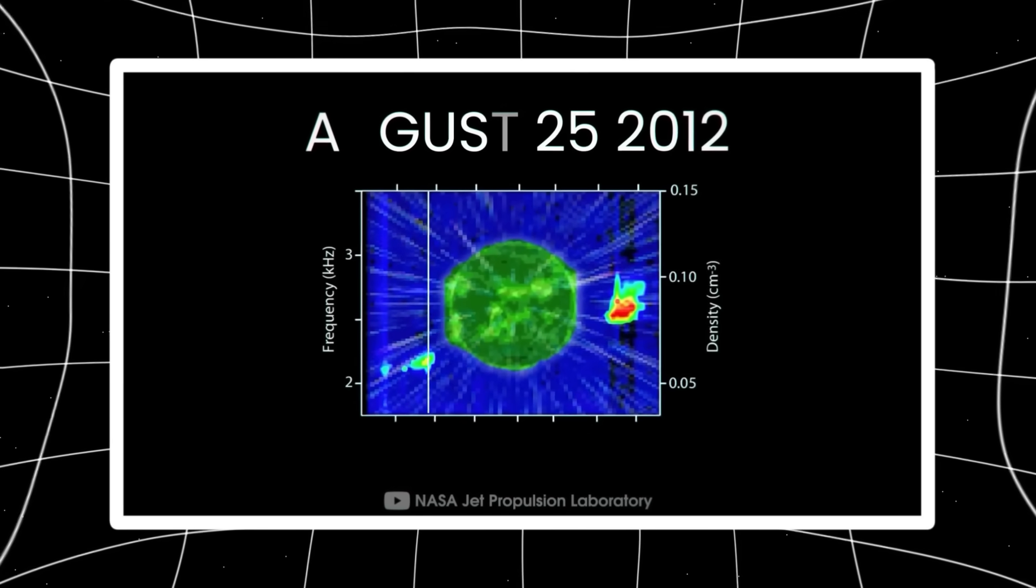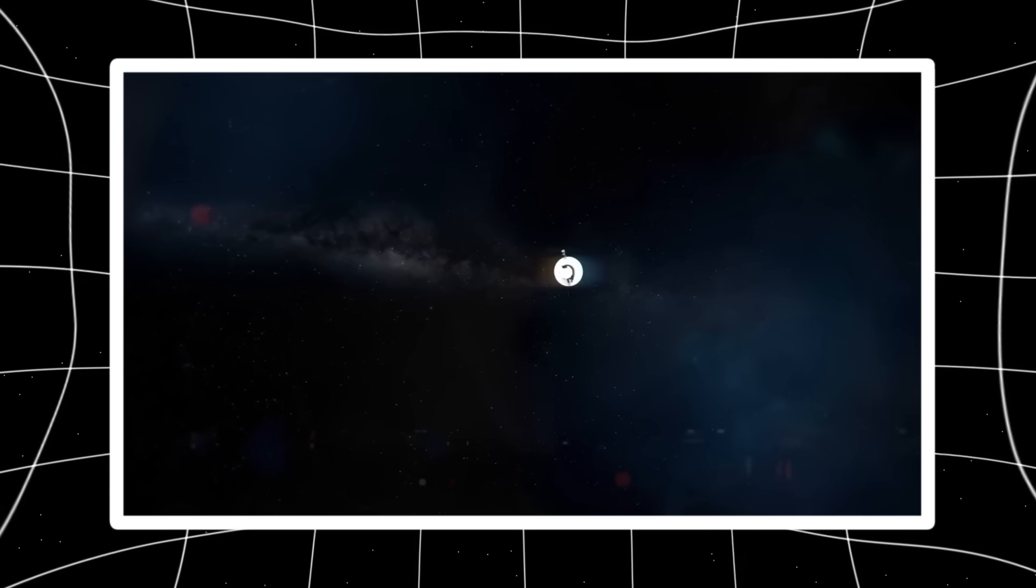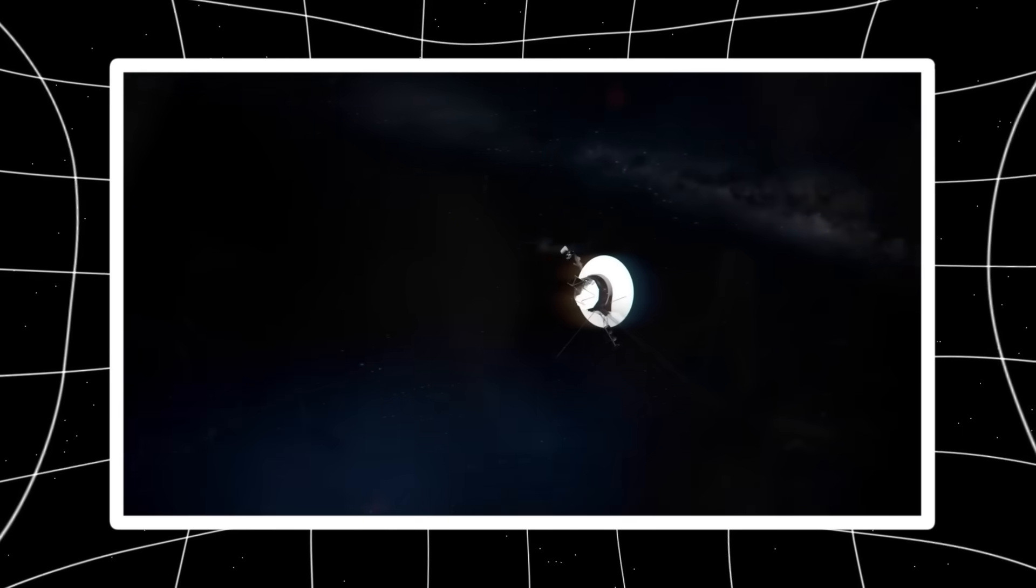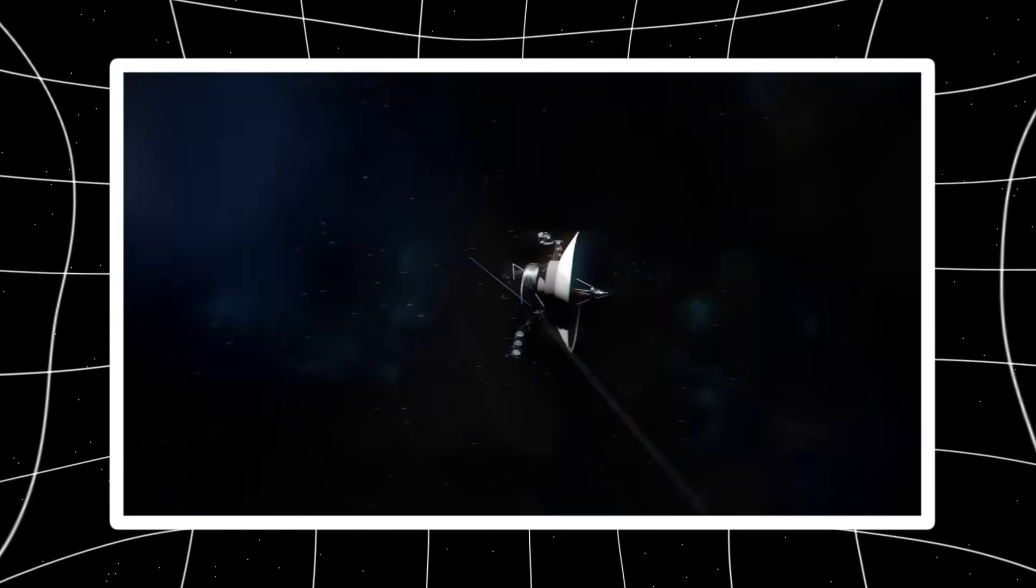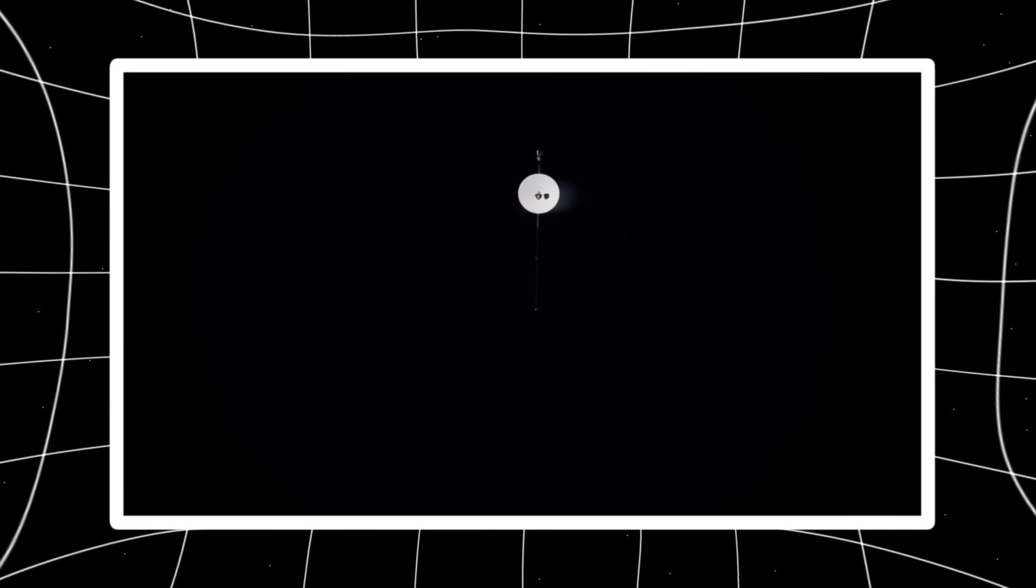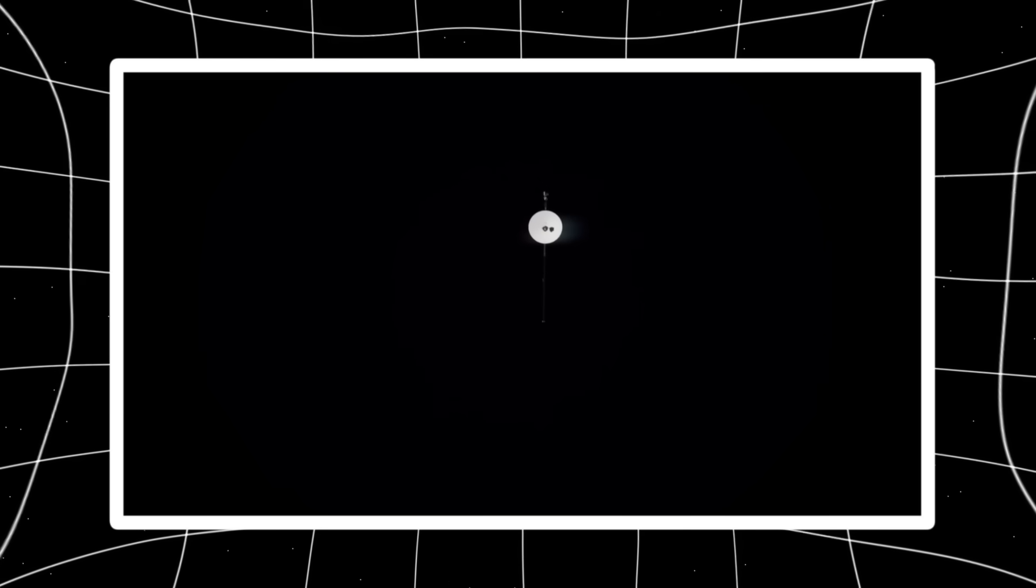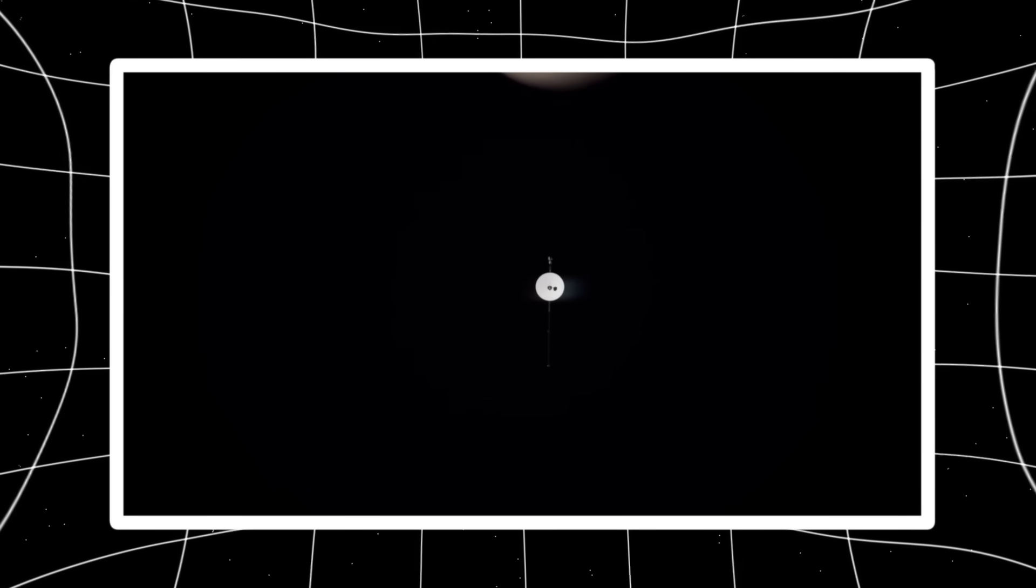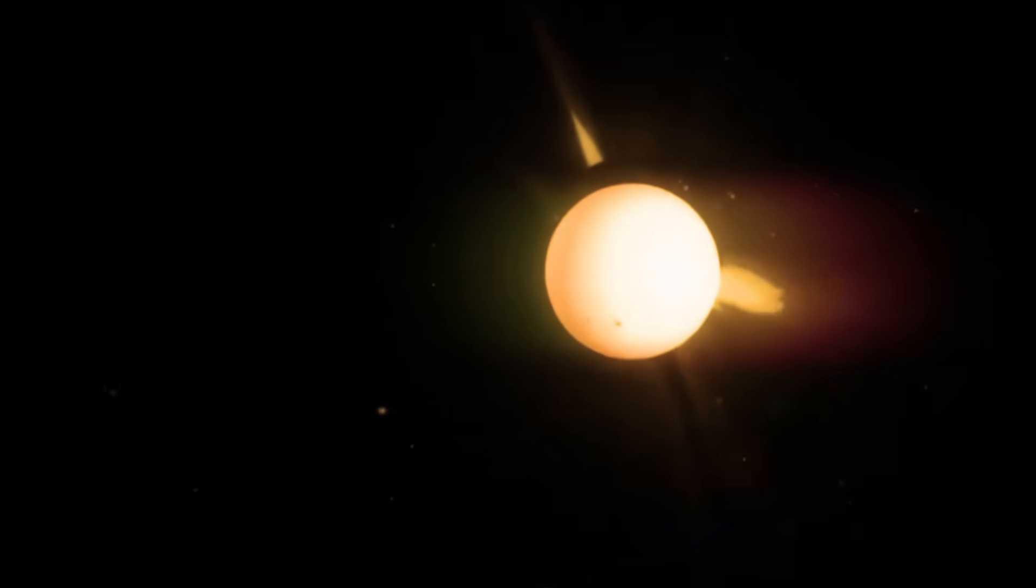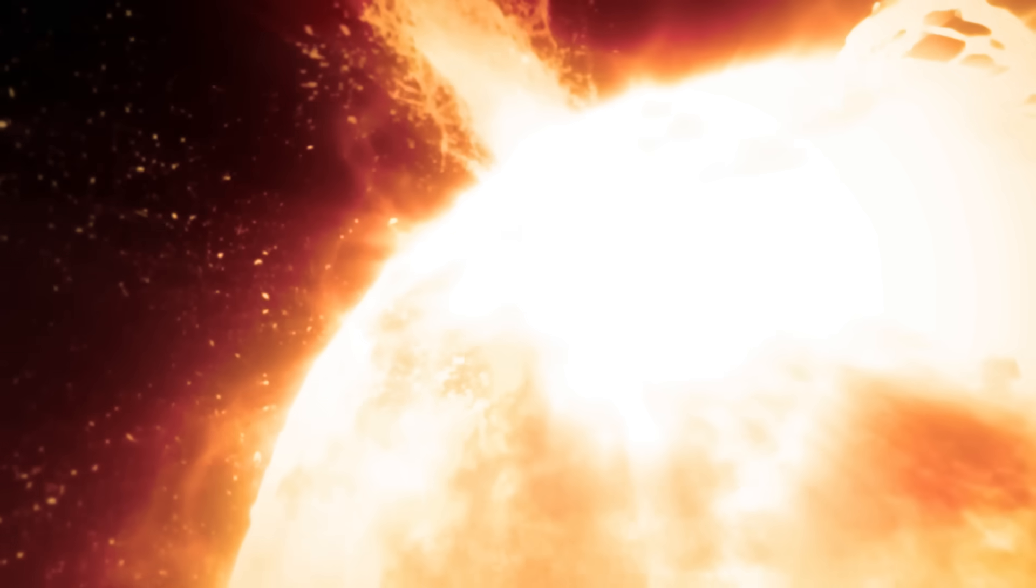Back in 2012, when Voyager 1 crossed the heliopause and officially entered interstellar space, it detected an 80-fold spike in plasma density. It felt the friction between solar winds and the interstellar medium. But curiously, it didn't register a change in magnetic orientation as scientists expected. This was strange. In fact, it was the opposite of what all models predicted. What kind of boundary is so turbulent that it changes density but not magnetic structure?